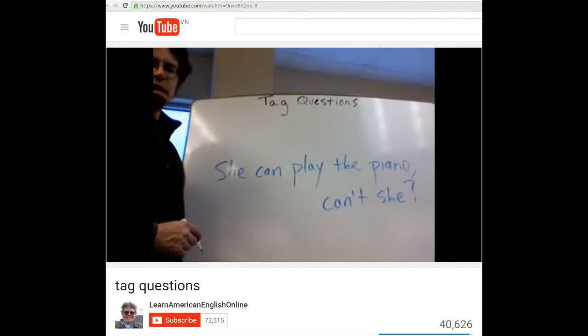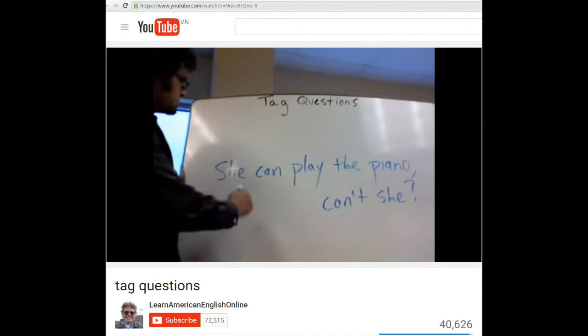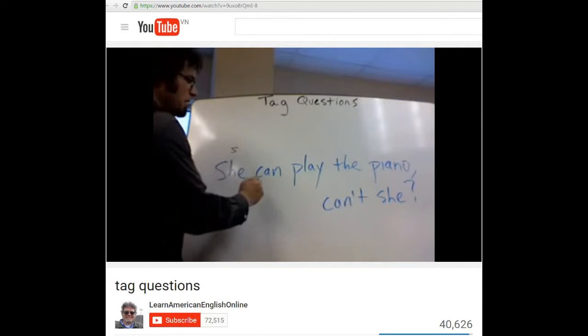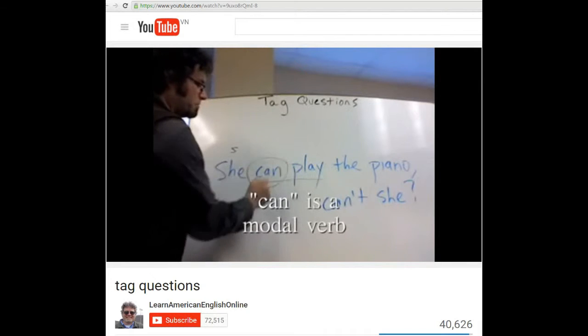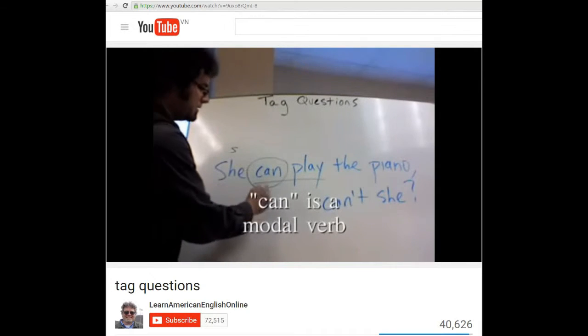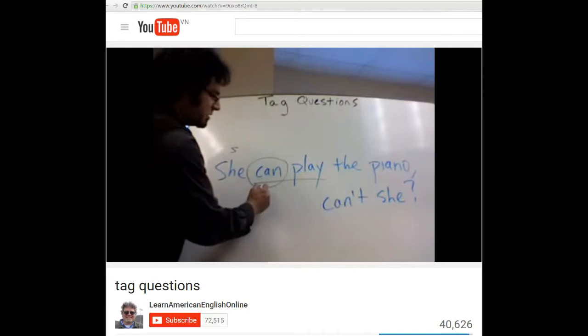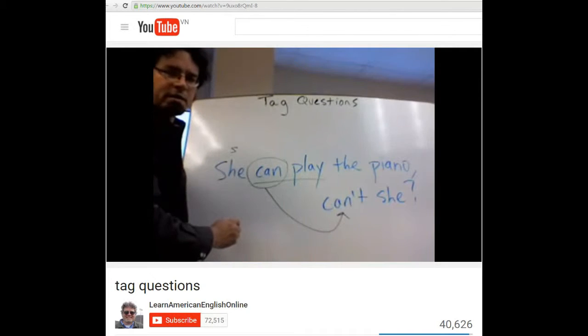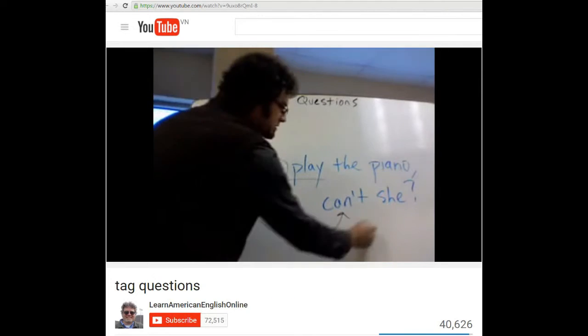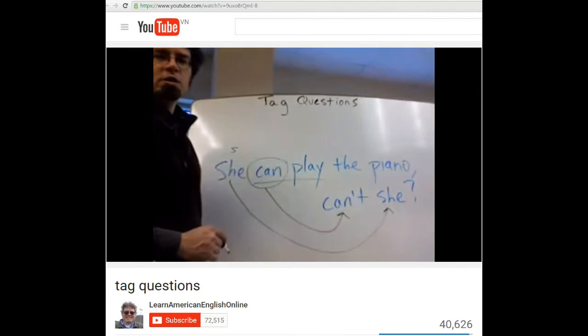She can play the piano, can't she? The subject is she. Can play. This is a modal. And at the end of the question, you make can negative and the subject is repeated. She can play the piano, can't she?